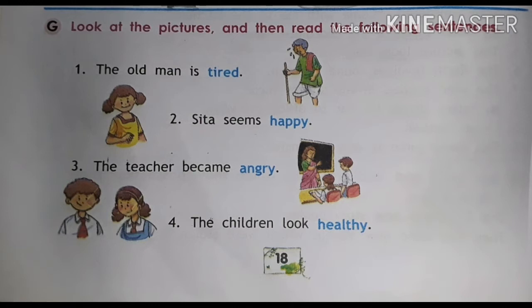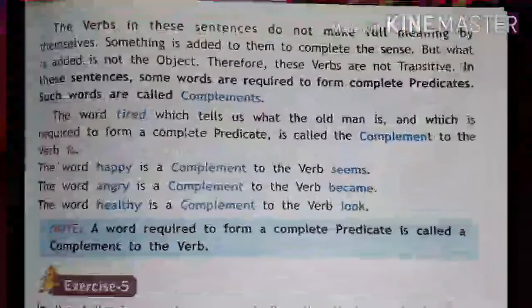Number three: the teacher became angry — the teacher is angry with the students. Number four: the children look healthy — the boy and girl are looking healthy. In these four pictures, we see different things going on. In the first sentence the key word is 'is', second sentence 'seems', third 'became', and fourth 'look'. After each of these verbs there are different words written in blue color.